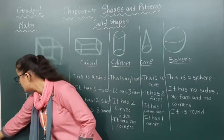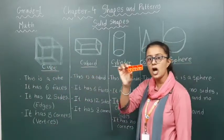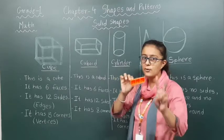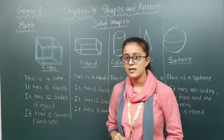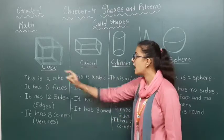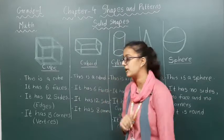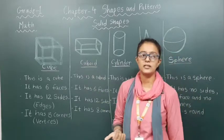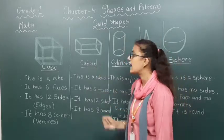Now let's quickly move forward to our next shape, the solid shape that is cuboid. A block is the shape of a cuboid. There are two kinds of blocks: one is a rectangular block and another is a square block. Cube and cuboid are somehow similar, but a cube has 6 equal sides while a cuboid does not have equal sides.